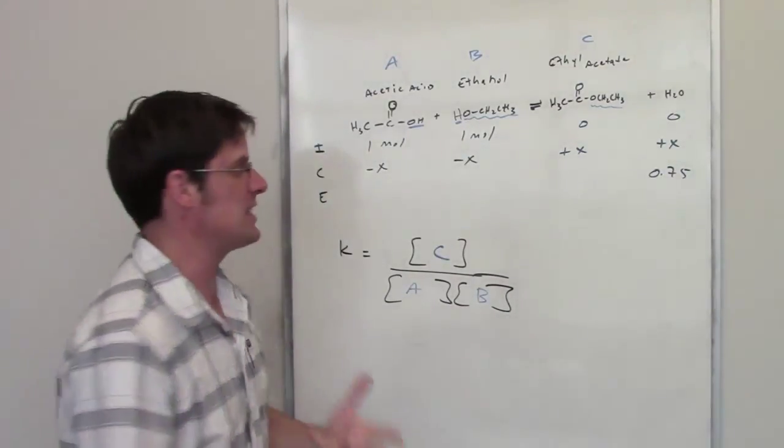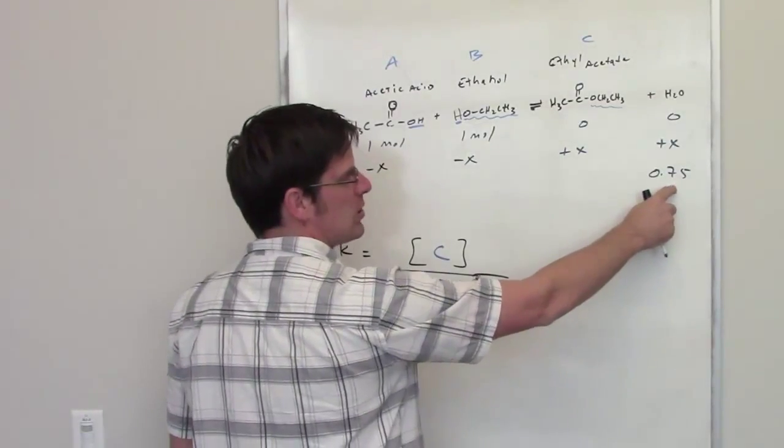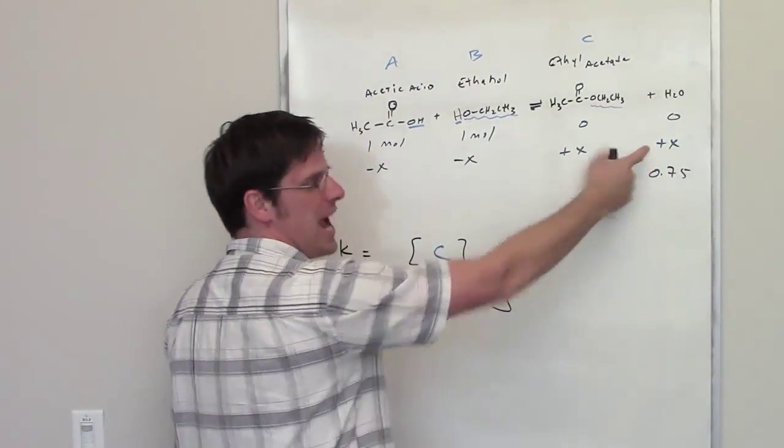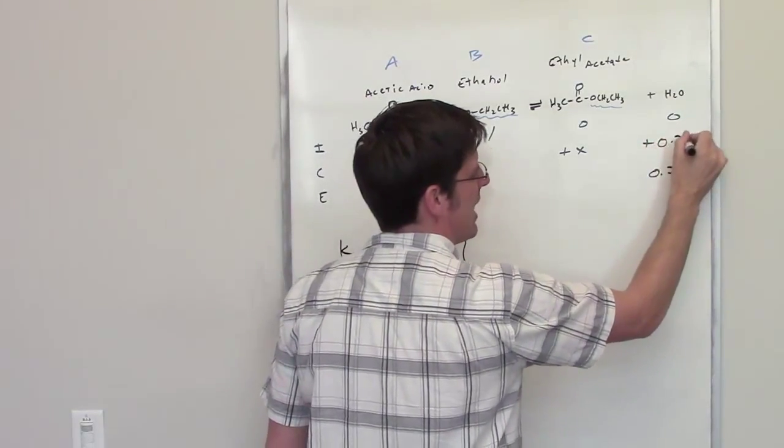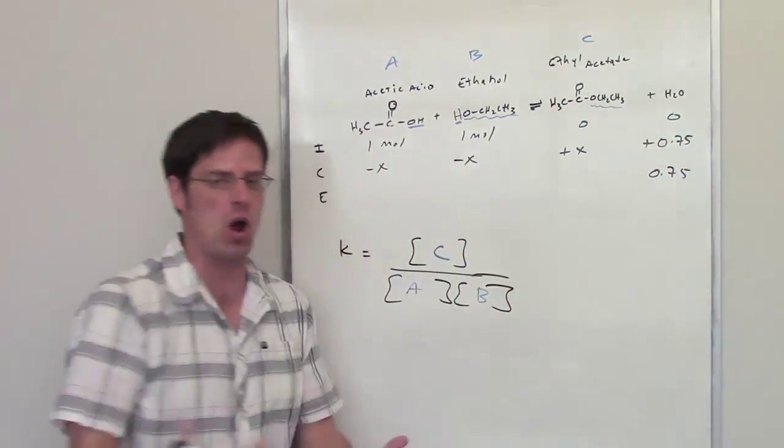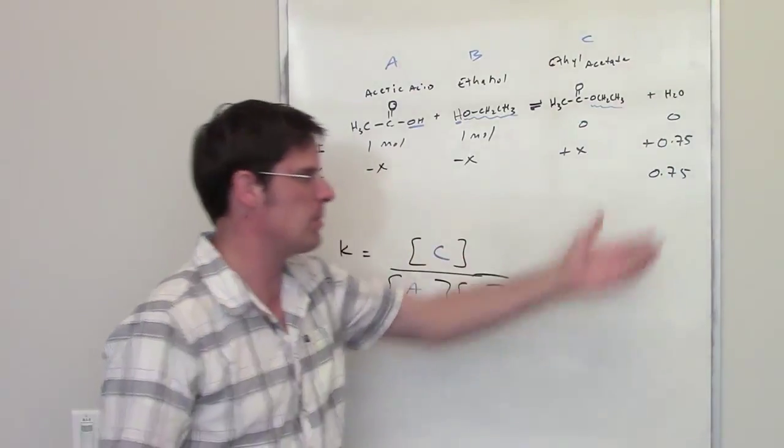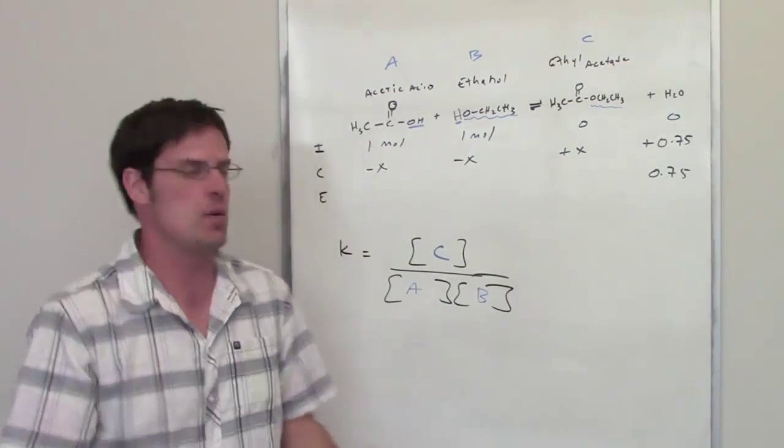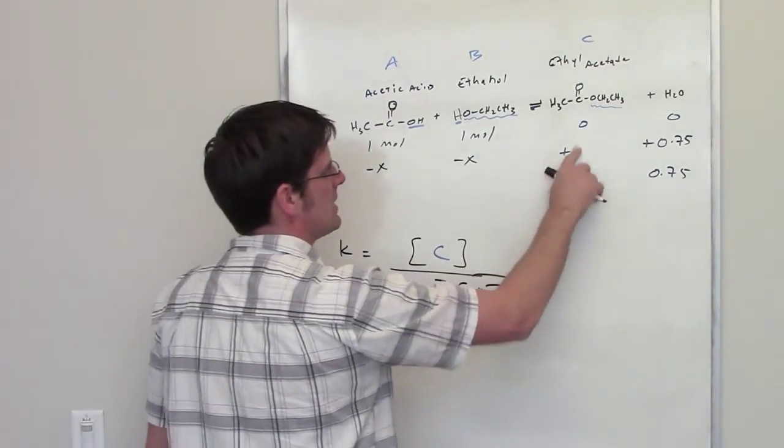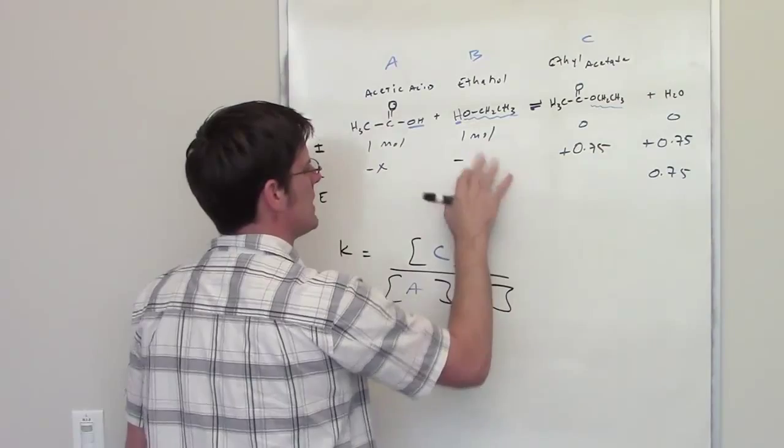Here's the nice, easy thing about this. If I have 0.75 moles of water at equilibrium, what is X? Well, X must have been 0.75, right, because I started out with 0 moles of water and I end out with 0.75 moles of water, at least from the information I've been given in this problem, that's what I'm assuming. So what that means is that I've got 0.75 for every single one of these.